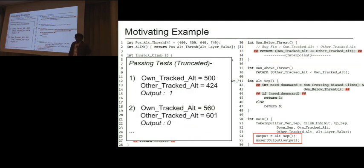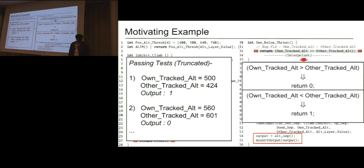How was this achieved by our tool? We take a set of passing test cases. I have truncated them to just the relevant variables. Note that this output which is shown there is actually the output of the entire program, not the function itself. Because of the first test case, the interpolant which was obtained right after the return statement was that if own_tracked_altitude is greater than other_tracked_altitude, I necessarily need to return 0 for the passing test cases to remain correct. And from the second test case, we could obtain that if it's less than I need to return 1. It didn't talk about the case when those two are equal.